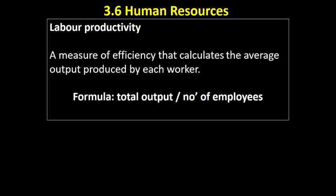The formula for calculating it is very easy — you just take the total output of the business and divide it by the number of employees that it took to produce that output.